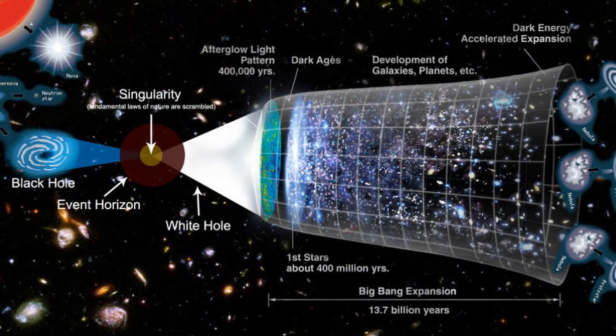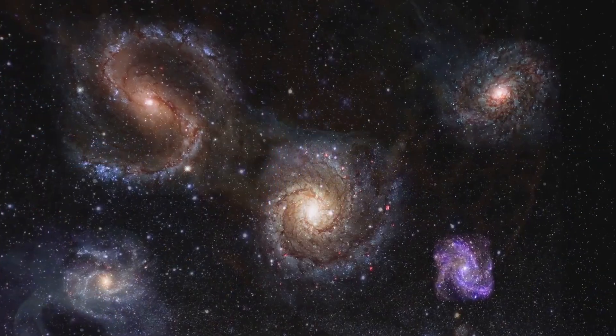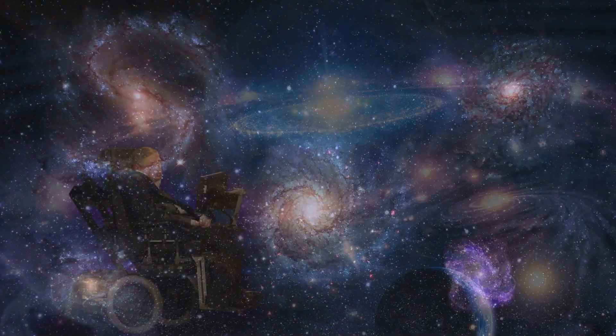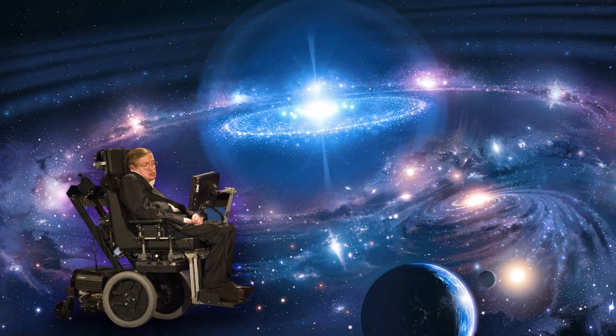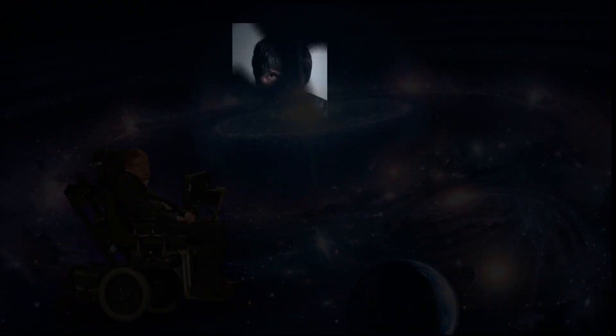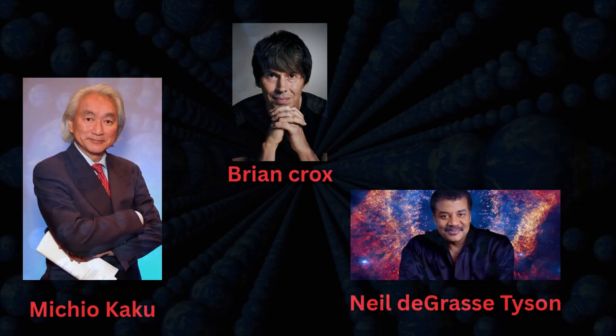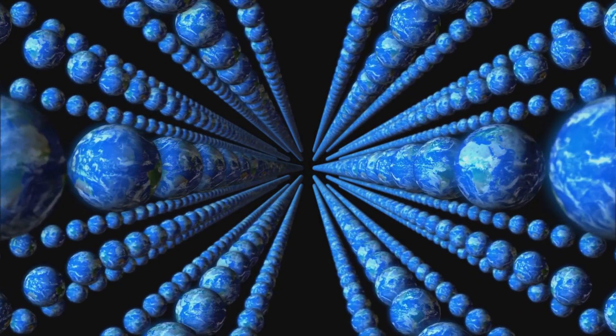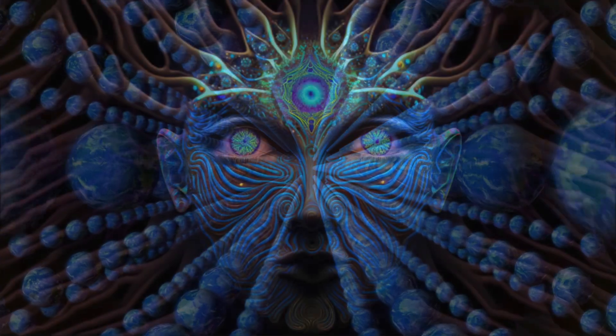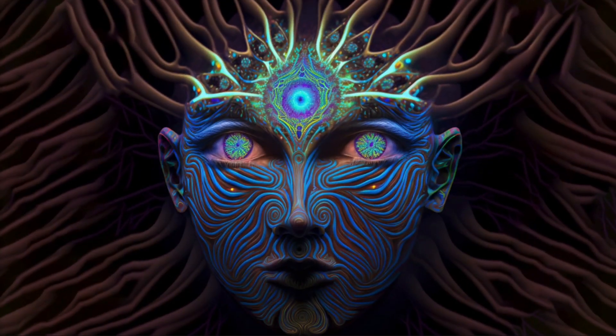This is the multiverse theory, the idea that our universe might be just one among countless others. It sounds like science fiction, but some of the greatest minds in physics—Stephen Hawking, Michio Kaku, Brian Cox, and Neil deGrasse Tyson—have all said it might be real. If they're right, then reality itself is far bigger and far stranger than we can imagine.